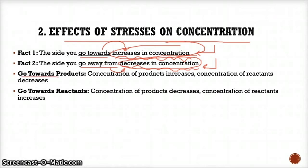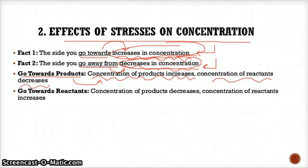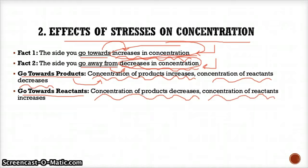For example, if you go towards the products, the concentration of the products will increase because you're going towards them, while the concentration of the reactants will decrease since you're going away from them. Conversely, if you go towards the reactants, the concentration of the products will decrease since you're going away from them, whereas the concentration of the reactants will increase since you're going towards them.